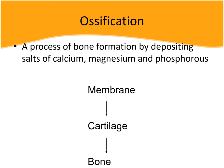Our bones are strong and hard, but at the starting point of development the bones are just represented by a thin membrane. Over this membrane there is deposition of calcium, magnesium, and phosphorus — layer after layer, the first layer, then the second, third, fourth, and so on.